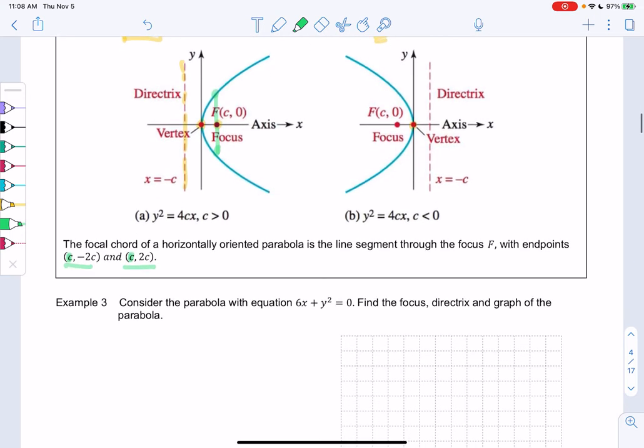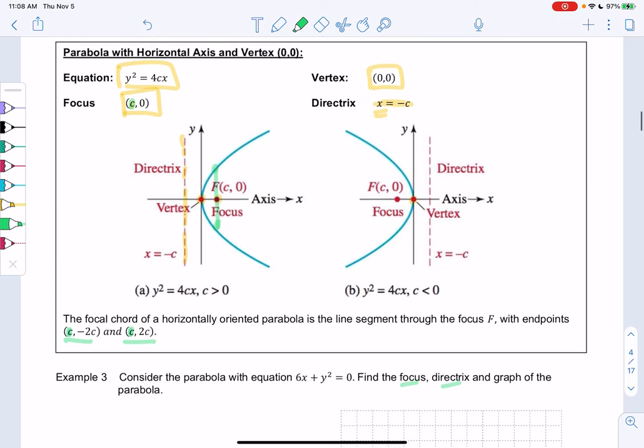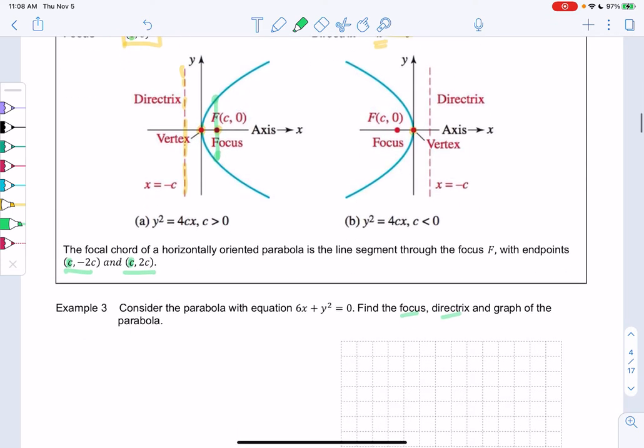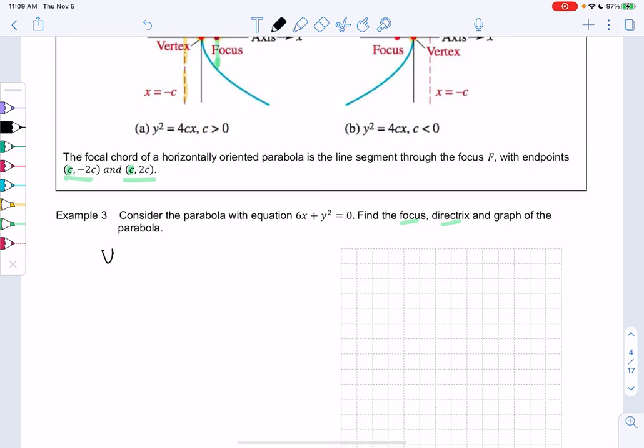So let's go ahead and find one. So we have the parabola 6x + y² = 0. Let's find the focus, directrix, and then graph. So I'm going to solve for y² so it fits this form. So I'll subtract 6x from both sides, and we get y² = -6x.